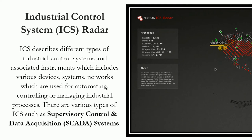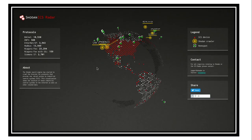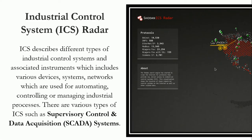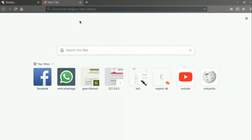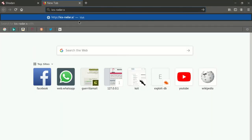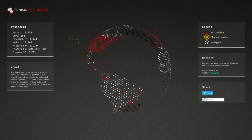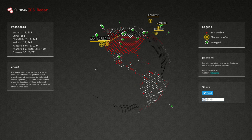ICS describes different types of industrial control systems and associated instruments, which include various devices, systems, and networks used for automating, controlling, or managing industrial processes. There are various types of ICS such as Supervisory Control and Data Acquisition — SCADA — systems. Shodan ICS Radar crawls various protocols to fetch raw data and information about ICS. This tool visualizes and shows the location of various ICS devices and other relevant data. To view the ICS Radar, visit the site and it will show a revolving globe with green markers representing various ICS devices.